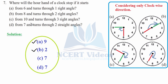Part c: from 10, turns through three right angles — first two right angles takes you to the opposite side at 4, then one more right angle — 15 minutes more — takes you to 7. So the answer is 7. Part d: from 7, turns through two straight angles — two straight angles make one complete revolution, so you return to the same position, which is 7. That was question number 7, the last question.